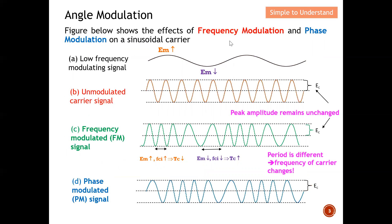The figure below shows the effect of frequency modulation and phase modulation on a sinusoidal carrier. Part A here is the modulating signal — you can see that it typically has a lower frequency. Part B is the unmodulated carrier, which does not carry any information at this moment. You can see the carrier has a higher frequency compared to the modulating signal. Carrier signals need to have a higher frequency than the modulating signal.